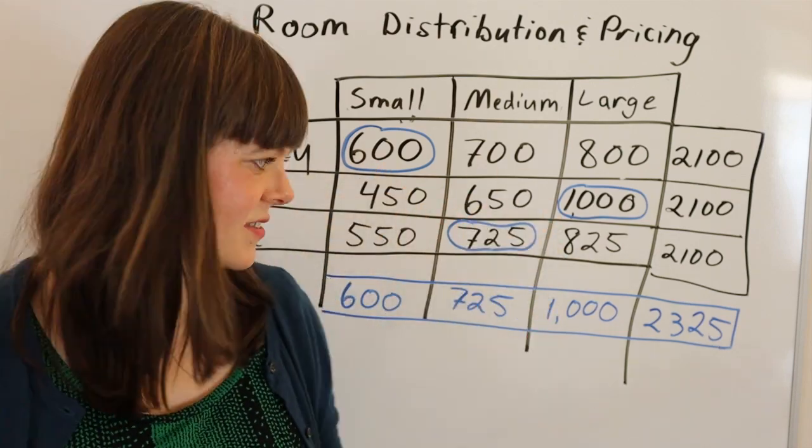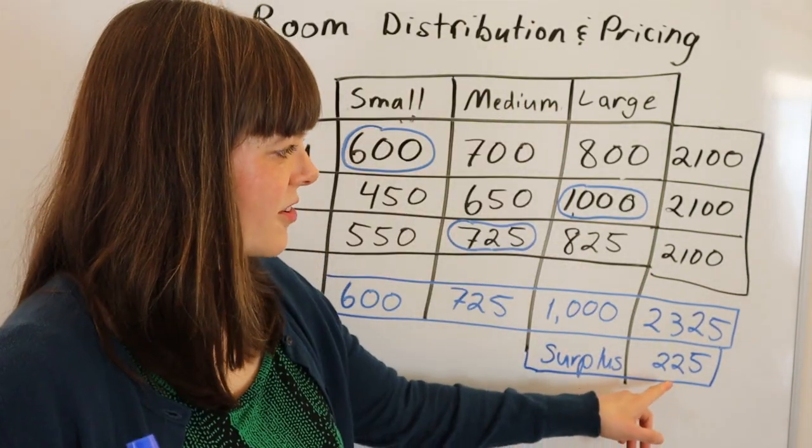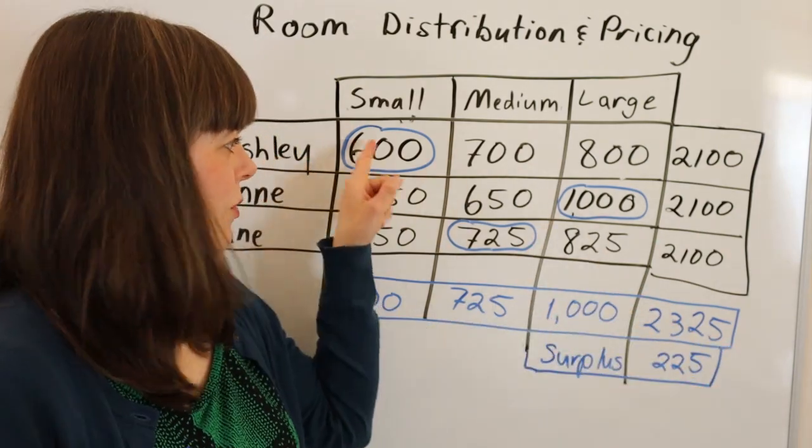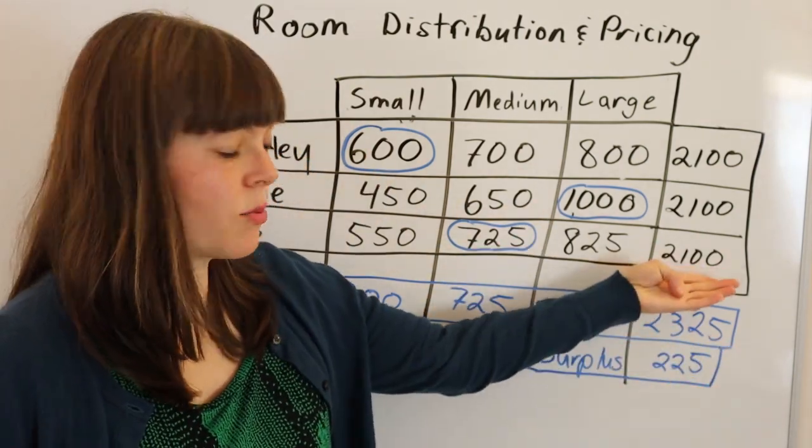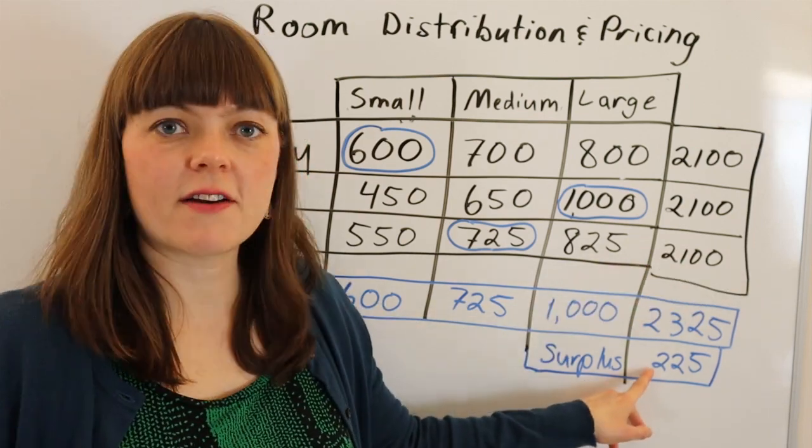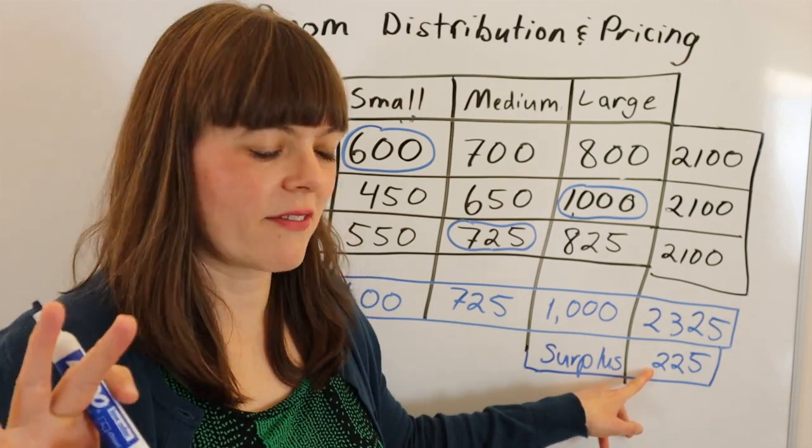So let's calculate the surplus. The surplus is $225, which is $2,325 - that's the total amount we would pay if we each paid what we bid - minus what we actually have to pay, $2,100. So we have $225 extra dollars, which we can divide evenly among the three of us.